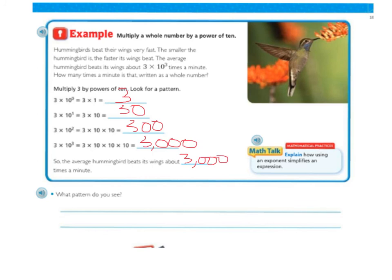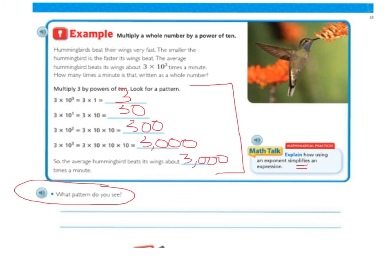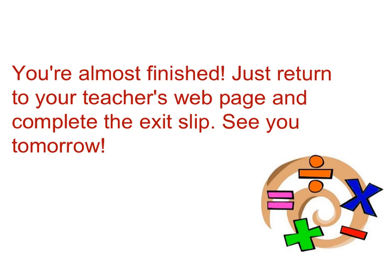For the math talk, explain how using an exponent simplifies an expression. This part is your assignment for tonight — it says what pattern do you see? Looking at our example, you need to write a sentence or two about what pattern you see. That is part of your assignment and part of your grade, along with the exit slip. Be sure you come to school with this part completed. Return to your teacher's webpage and complete the exit slip, because this is how you get credit for reviewing the lesson. Have a nice evening and we will see you tomorrow.